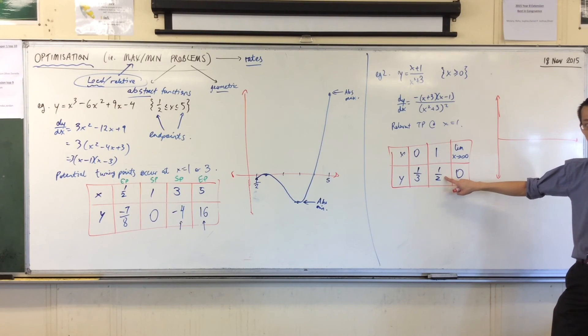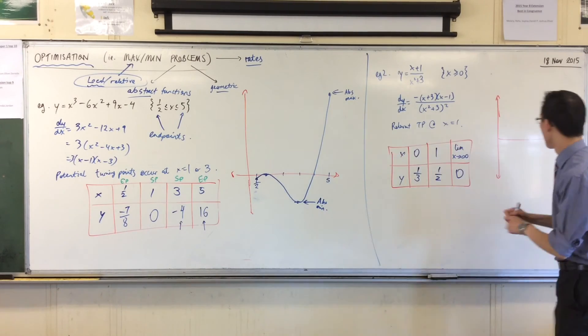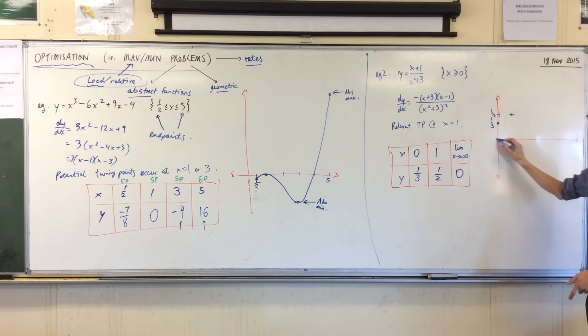Can you see how I argue, I reason that it's a maximum? Because look, start to draw the picture. At x equals 0, you're at a third. At x equals 1, you've got a stationary point up at a half. And then as x approaches infinity, you're going towards y equals 0.